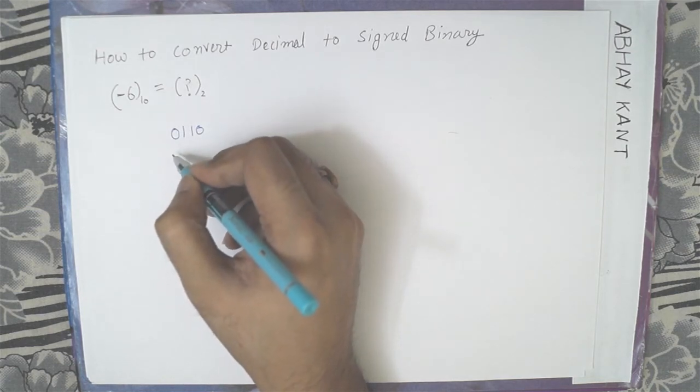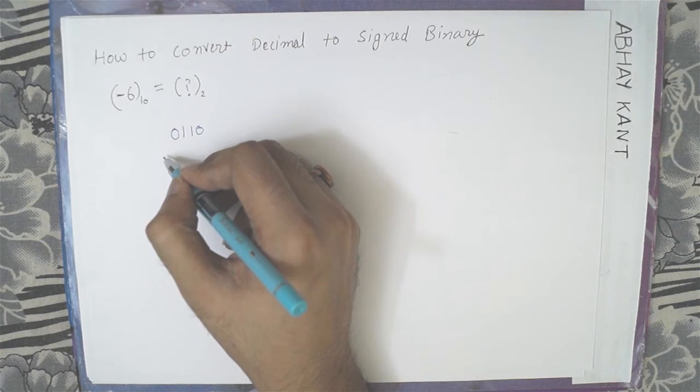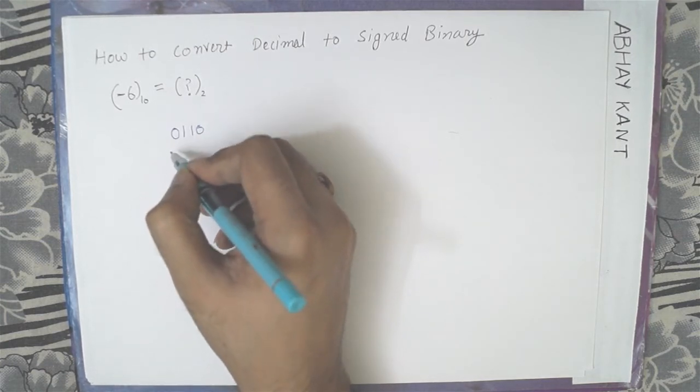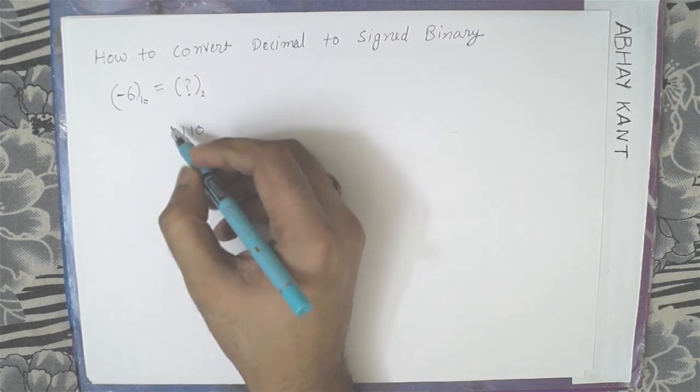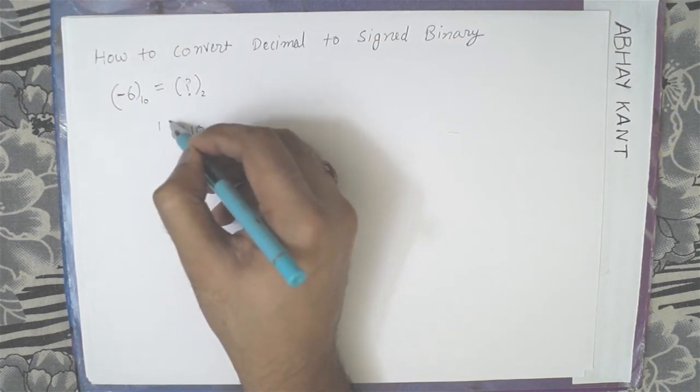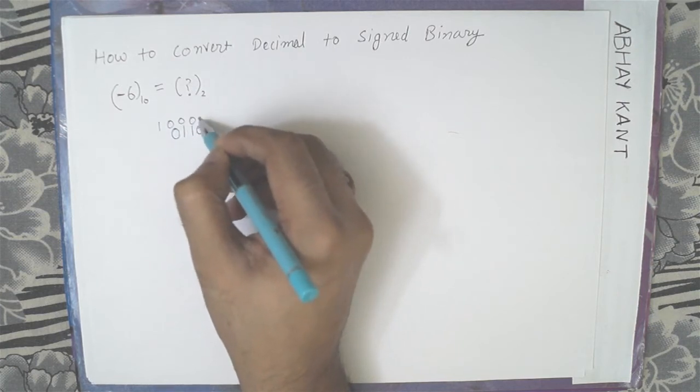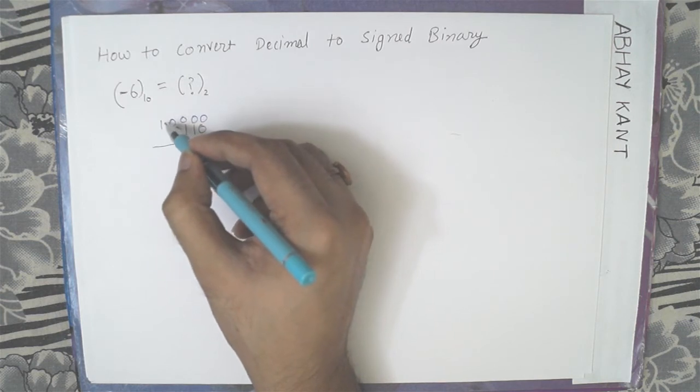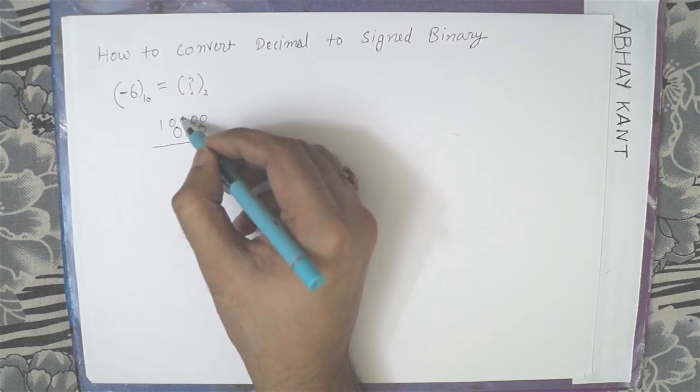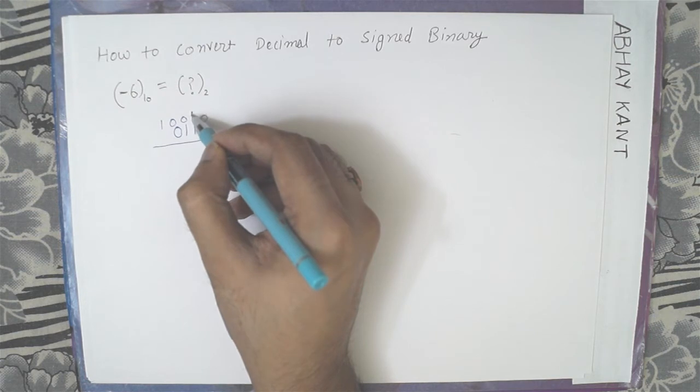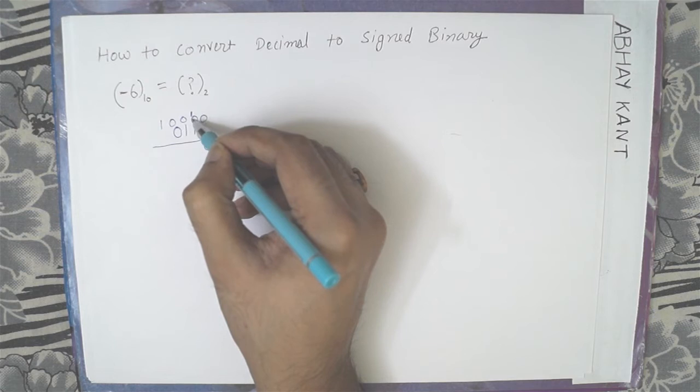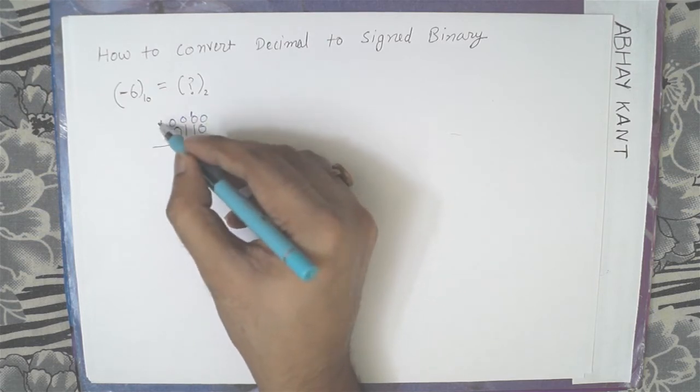Now we have to convert this into signed binary. So how do we do that? We subtract it from this number. So we take this borrow. So this becomes 2. So 0 minus 0 is 0. And then we take 1 borrow from here.